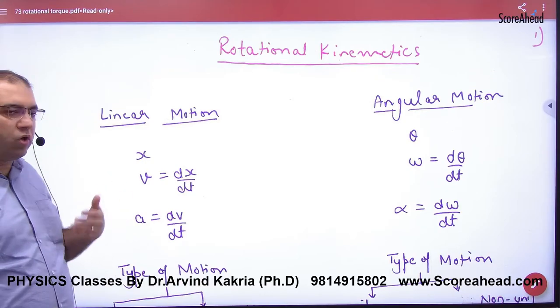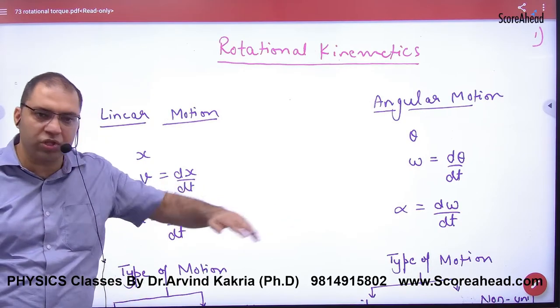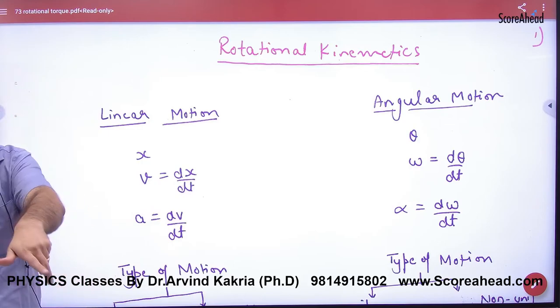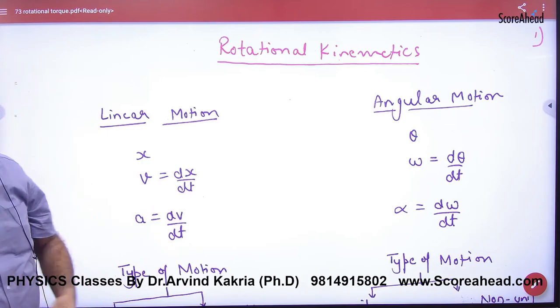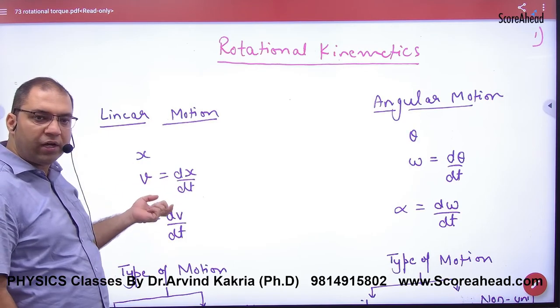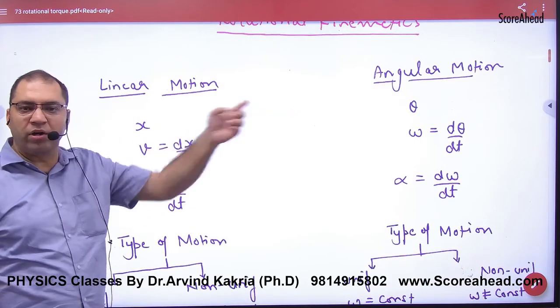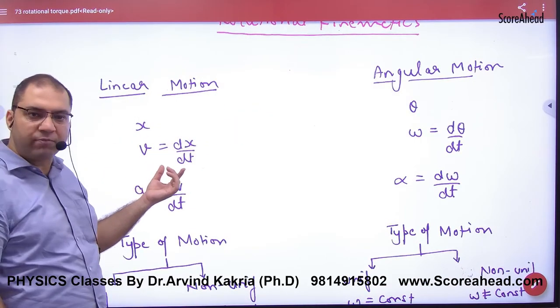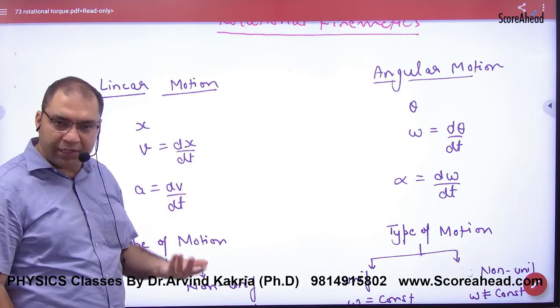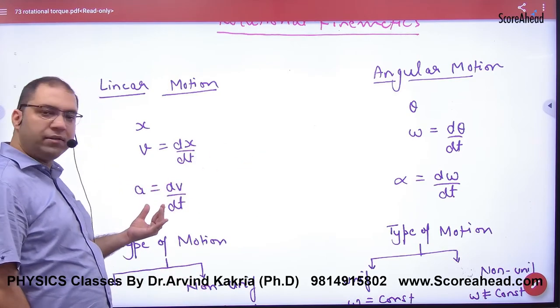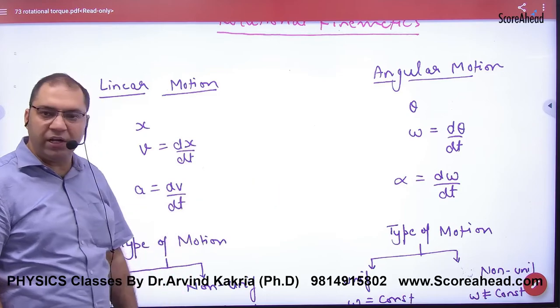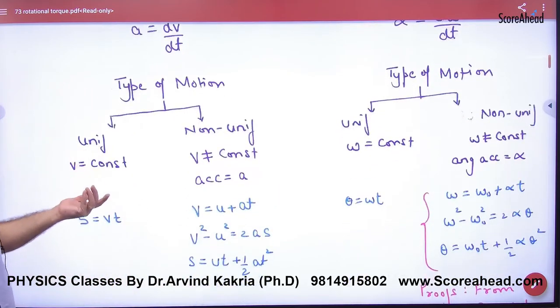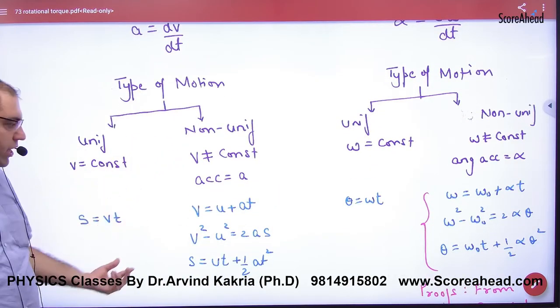We have two types of motion: linear motion and angular motion. If there is linear displacement x, then angular displacement θ. If velocity is v = dx/dt, then ω = dθ/dt. If acceleration is a = dv/dt, then α = dω/dt. Types of motion: uniform and non-uniform, with their equations of motion.